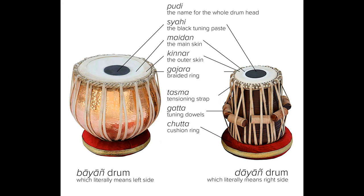Tasma: tension strap — straps made of leather or synthetic materials that hold the drum head in place and can be tightened or loosened to tune the drum. Duggie: shell — the main body of the drum, typically made from hardwood.